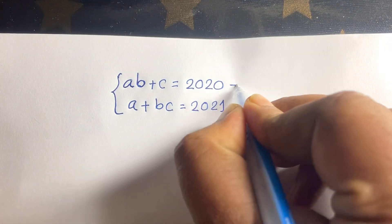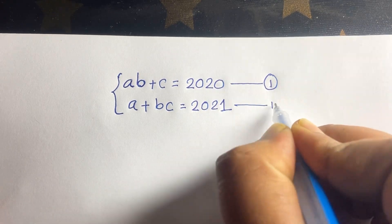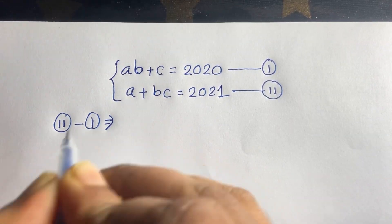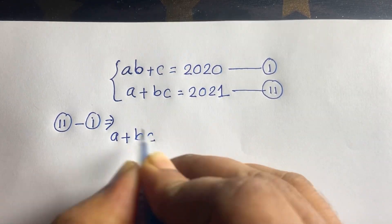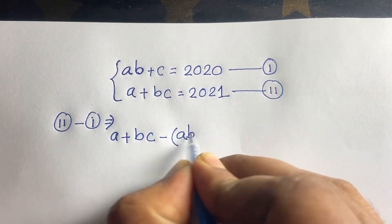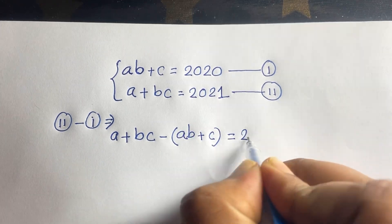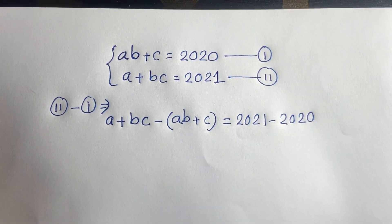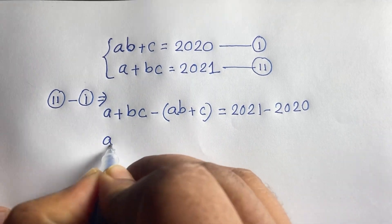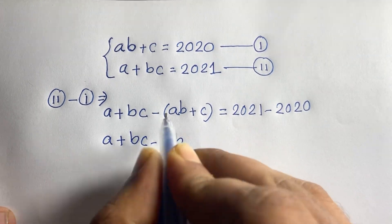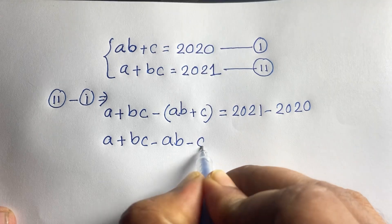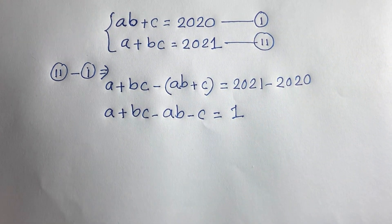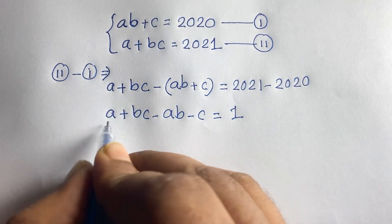To solve this question, first of all, this is our first equation and this is our second equation. I subtract the second equation from the first equation. So the second equation is a + bc minus the first equation ab + c, which is equal to 2021 minus 2020. Now I can see: a + bc minus ab minus c equals 1.